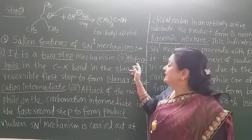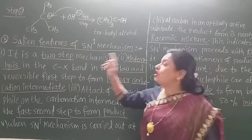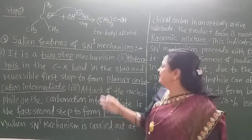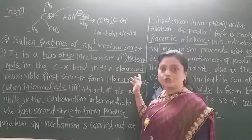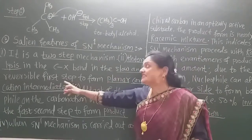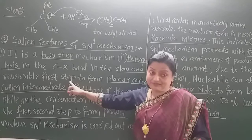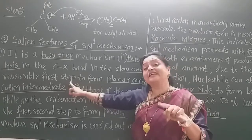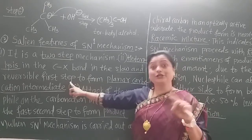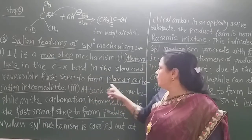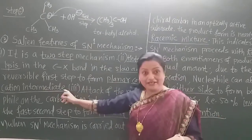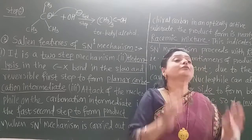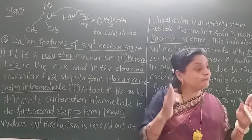The next point is the heterolysis of the C-X bond — heterolytic fission — observed in the slow step, which is also the reversible first step. That slow step is reversible because we show both-side arrows. This forms the planar carbocation intermediate in the first step.